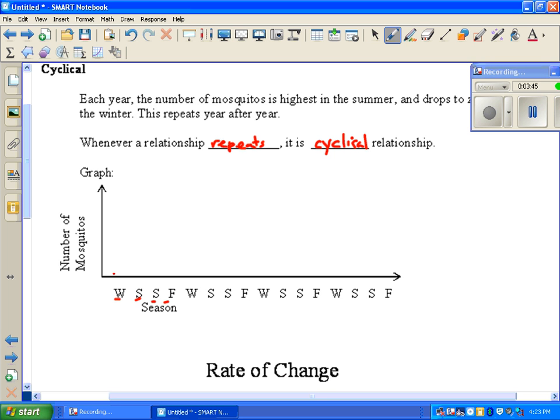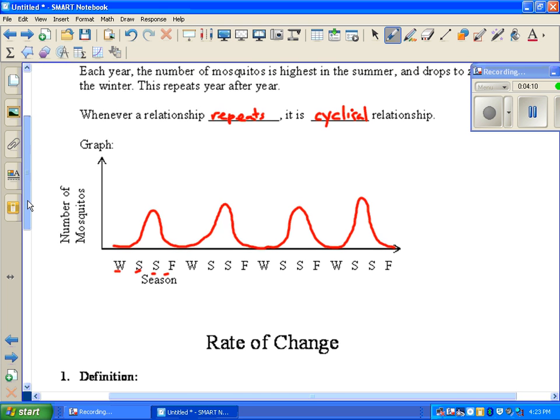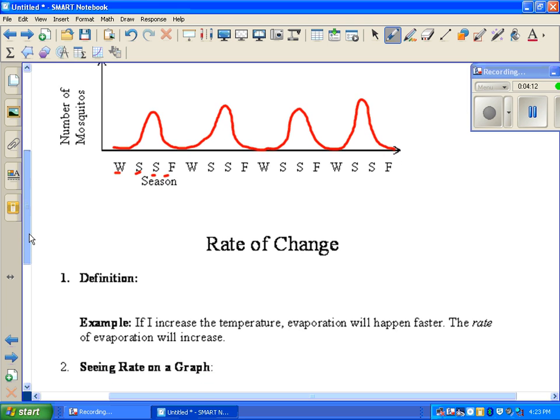Then the next year, it repeats again. We're going to have no mosquitoes in the winter, and then in the summer, it's going to go up. It's going to peak in the summer and then go down in the fall. And in winter, there's zero again. Then in the summer, it might go up again, and then back down to zero in the winter. Then up again in the summer, back down to zero in the winter. So if it repeats itself like that, we're going to call that a cyclical relationship.